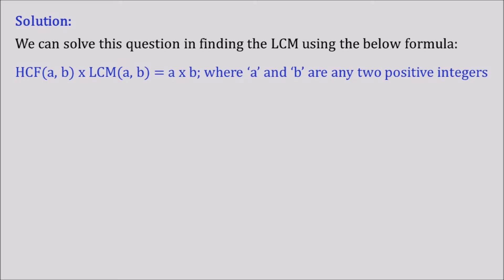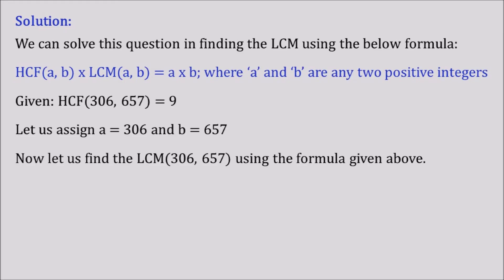Now let's move ahead. So we got the HCF of 306 and 657 which is 9. Let us utilize this number. Now let us assign a equals 306 and b equals 657. Now let us find the LCM of 306 and 657 using the formula given above.